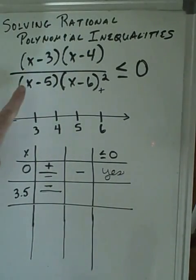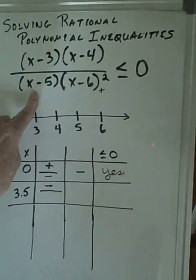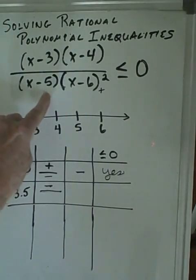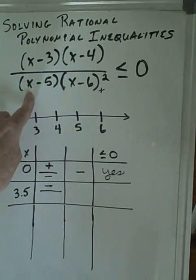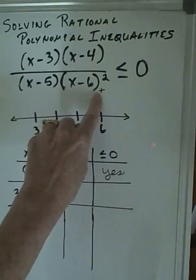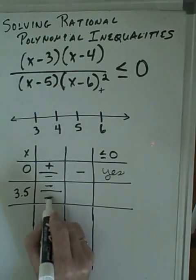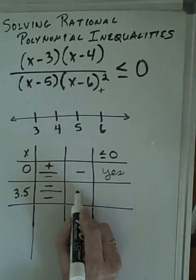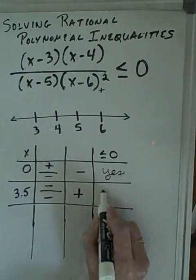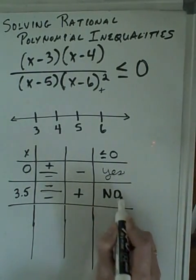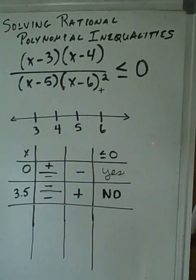Divided by, put 3.5 in here, this would be negative because 3.5 minus 5 is a negative value. And we said before this is positive. So a negative times a positive is a negative. Negative divided by negative gives you a positive. So the answer here would be no, it is not less than or equal to zero.